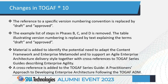Looking at other changes in TOGAF 10: earlier there was a numbering convention using .1, .2 versions, and then 1.0 if approved. They removed that numbering convention and introduced the terminology of draft and approved. Draft means the document is under revision and not yet approved, while approved means it has been reviewed and approved.